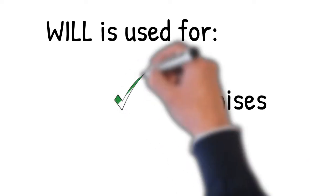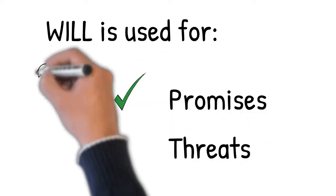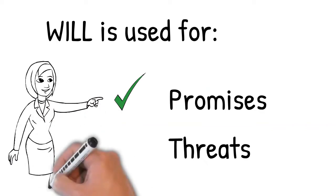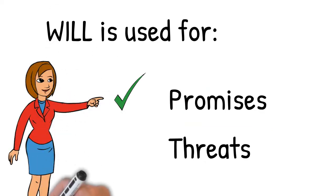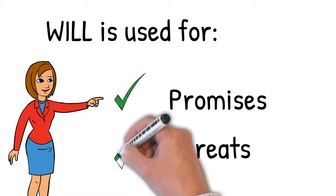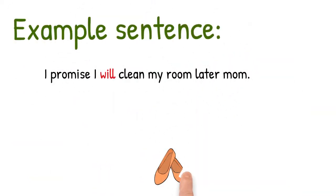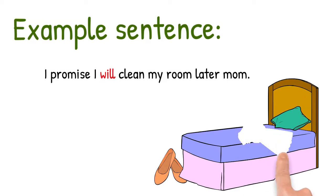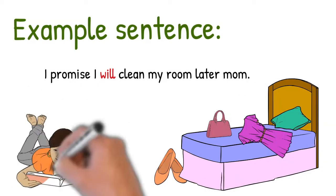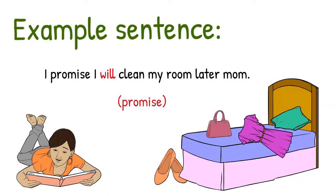Now, will is used for promises and threats. Think about it. Promises and threats are the same thing. I promise to do this for you and I promise to do this to you. Here's an example sentence. I promise I'll clean my room later, mom. You hear kids saying that all the time. I will. I'll do it later. I will. Those are promises.